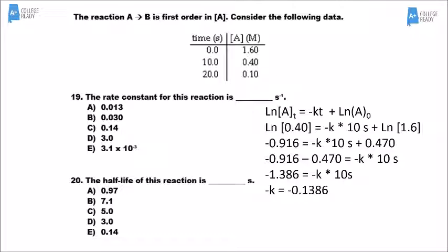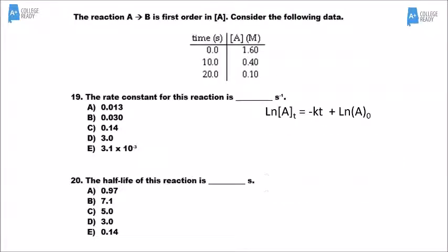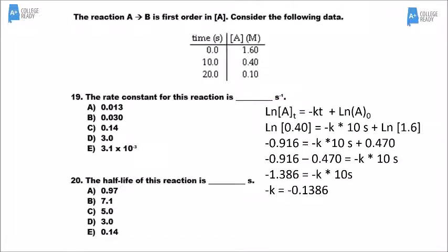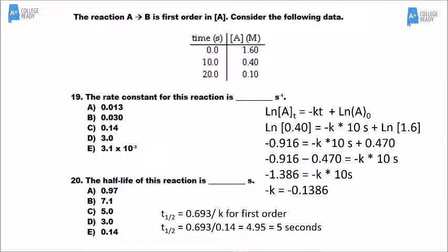There are two ways to find the half-life. You could use the integrated rate law, plugging in 1.6 for the initial value and 0.8 for half of it, then solve for T. However, there's also a half-life equation on the equation sheet. For a first-order reaction, the half-life equals ln(2)/K. We know K is 0.14, and when we do that math we get 5 seconds. Either method gives about 5 seconds.